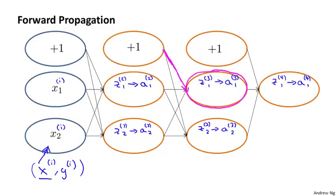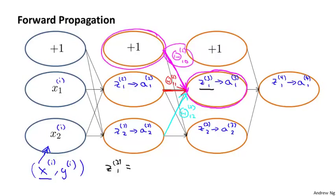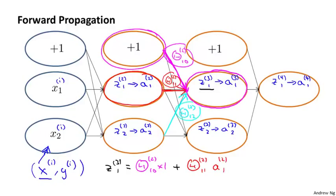We have this weight shown in magenta, which is theta(2, 1, 0), and this weight highlighted in cyan, which is theta(2, 1, 2). The way we compute z31 is: z31 equals this magenta weight times this value, so that's theta(2, 1, 0) times 1, plus this red weight times this value — theta(2, 1, 1) times a21 — and finally plus this cyan weight times this value, which is theta(2, 1, 2) times a22. And so that's forward propagation.